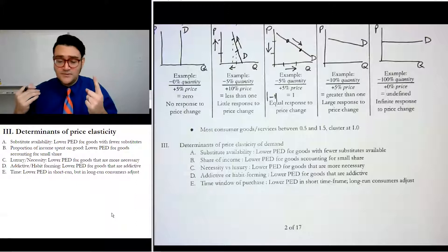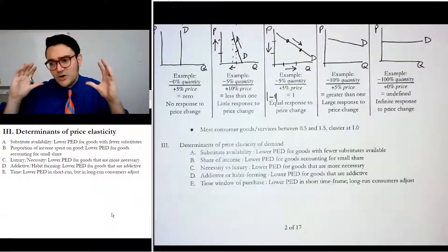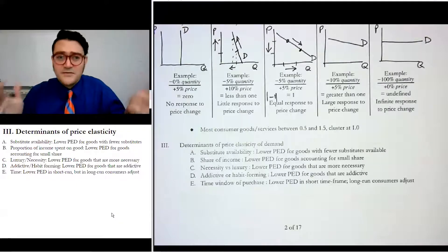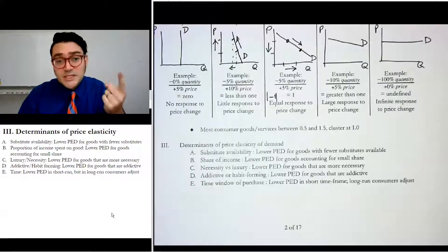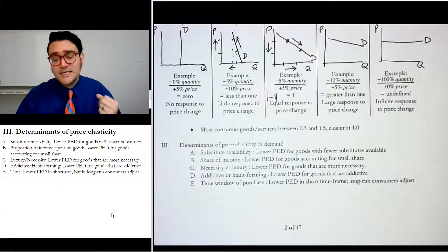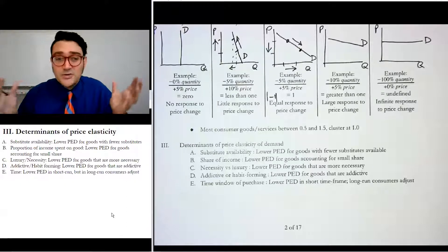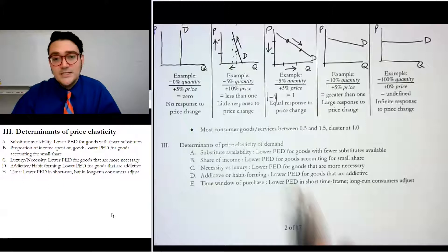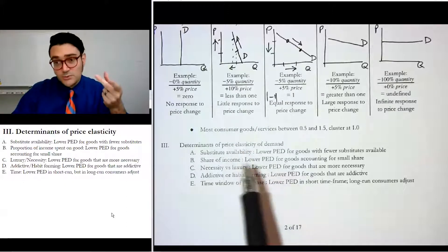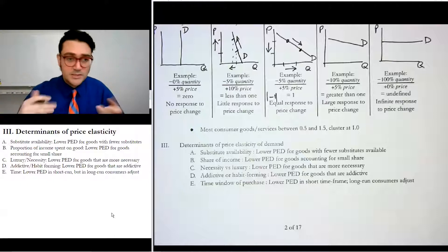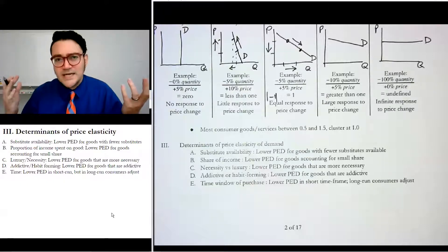First would be substitute availability. This is the idea that if there aren't very many substitutes for your product, and you want to buy it, then you have to pay whatever the price is. So insulin is a great example. Gasoline is another example. Cigarettes and heroin. Toilet paper, where there's not that many substitutes for it. And so you're going to have to just buy it. Now, these also work the reverse way. If there's lots of substitutes like Coca-Cola and Pepsi products, then generally they're more elastic demand.